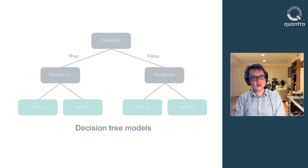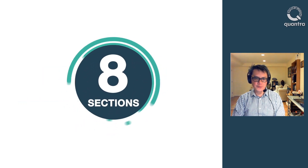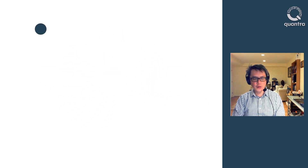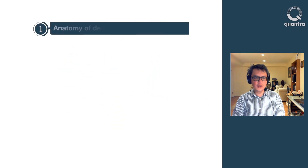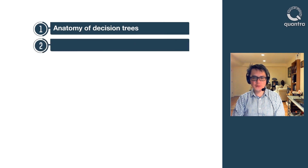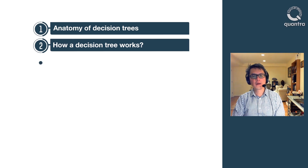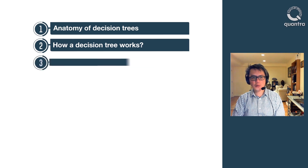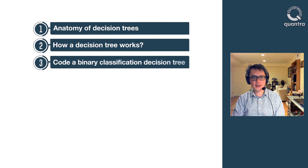This course consists of eight sections. In the first section, you will be introduced to the anatomy of decision trees. In the second section, we will demystify the black box — how a decision tree actually comes up with the optimal prediction. In the third section, you will learn to code a binary classification decision tree, which predicts the next day's trend of the stock.